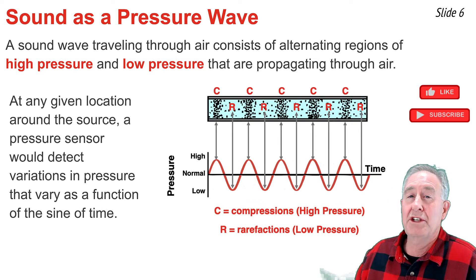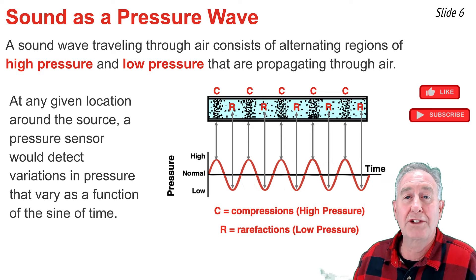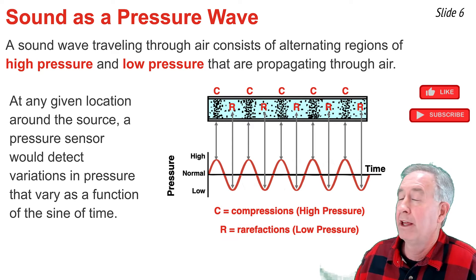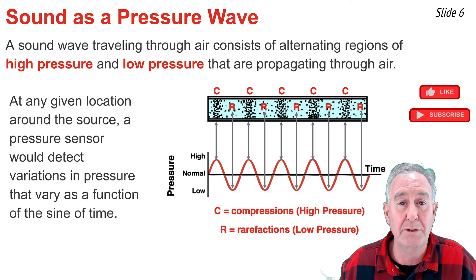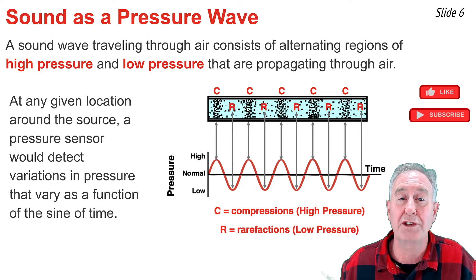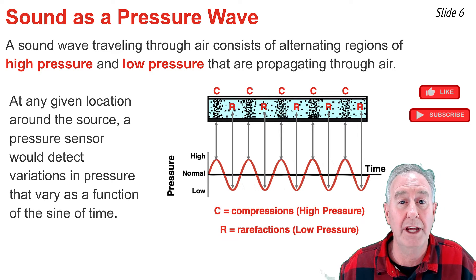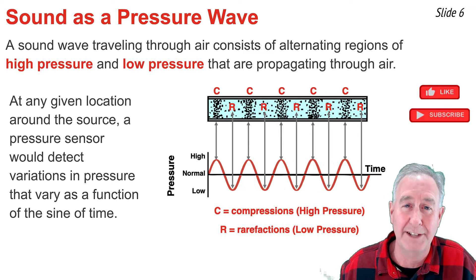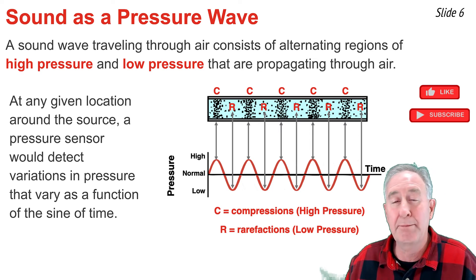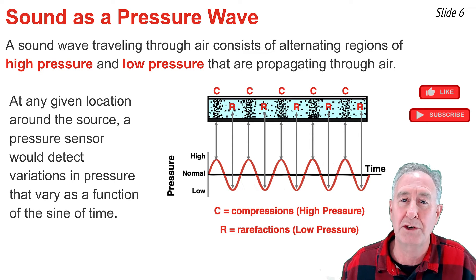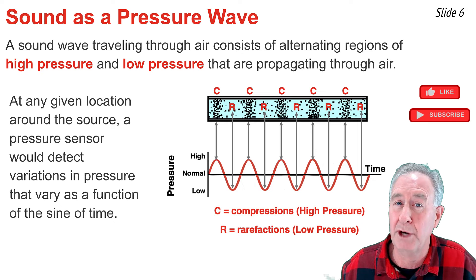In this diagram, we see the familiar pattern of compressions and rarefactions at the top. A pressure sensor placed any given distance from the source would detect variations in pressure as a function in time, and the pressure would vary as a function of the sine of time. As shown in the bottom part of this diagram, when a compression reaches the pressure sensor, it would detect a region of high pressure.